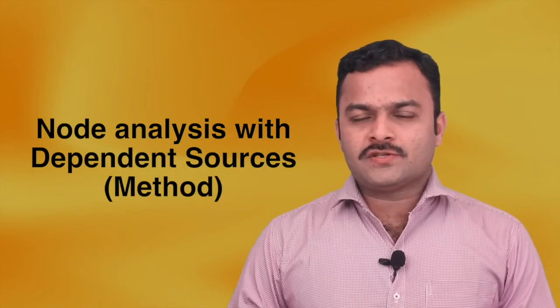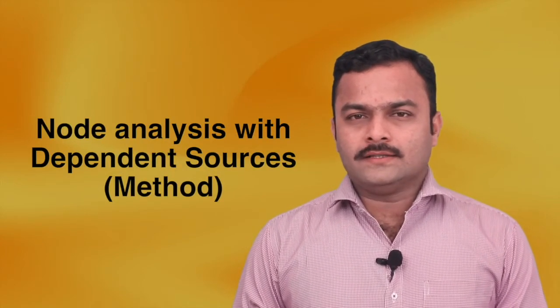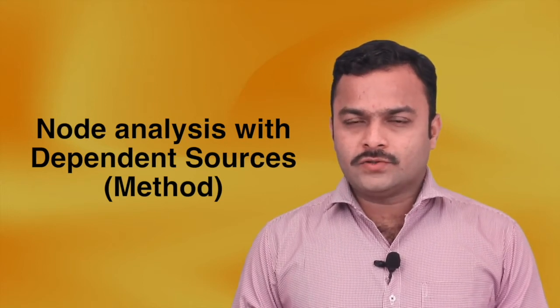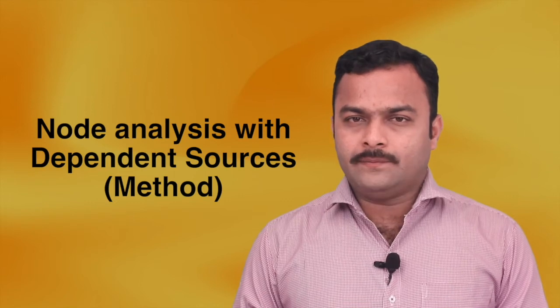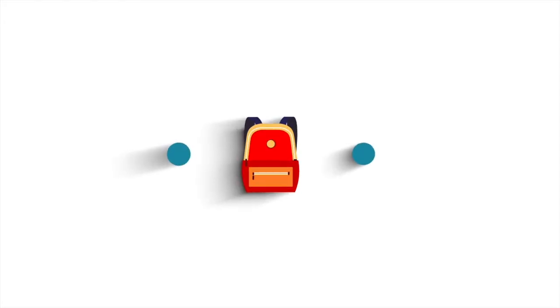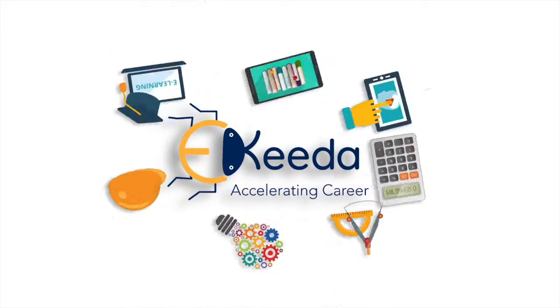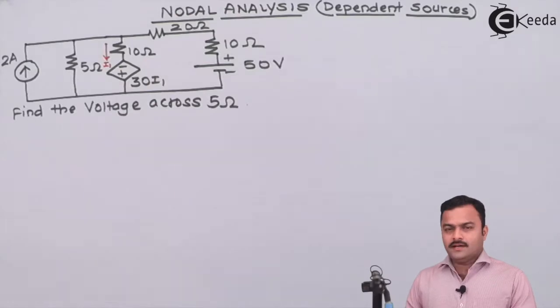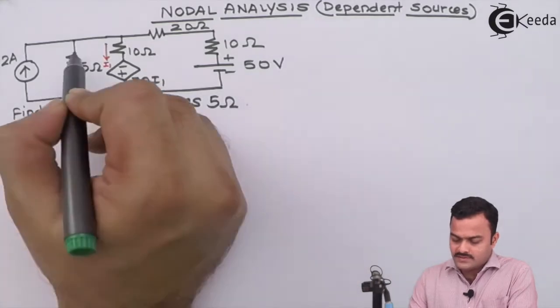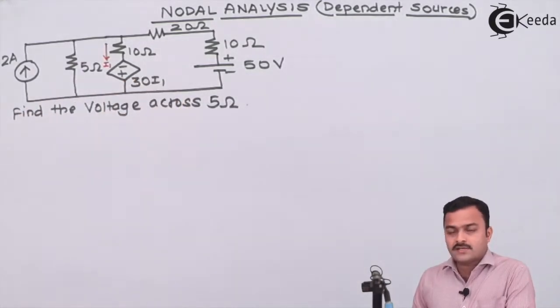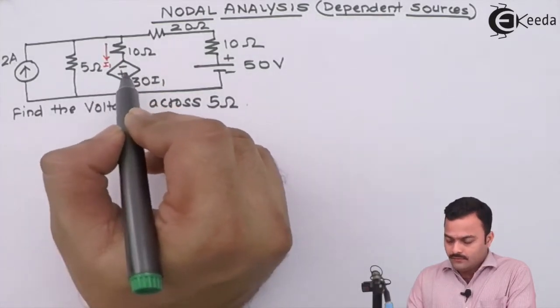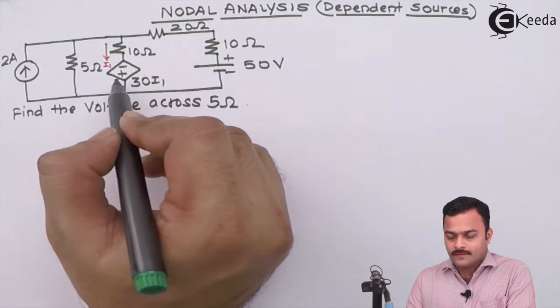In this video, we are going to see how to apply nodal analysis to a circuit which consists of independent sources along with dependent sources. The problem is to find the voltage across the 5 ohm resistance by using nodal analysis technique. In the circuit, we have this dependent voltage source which depends upon this current.